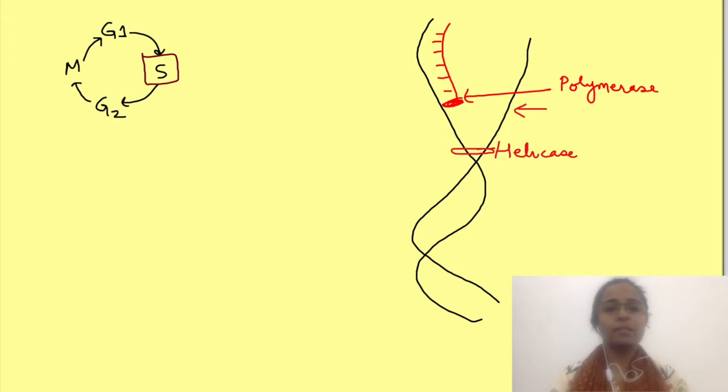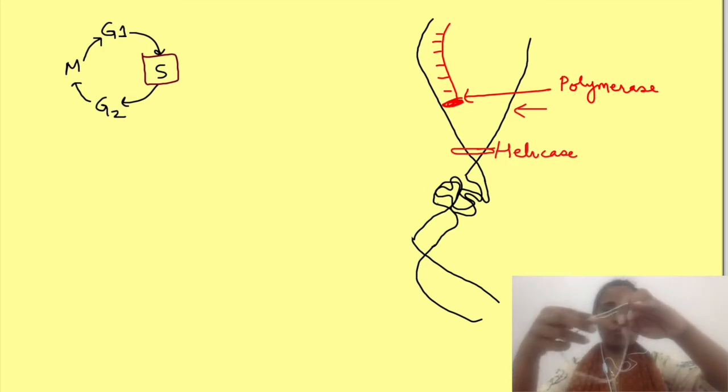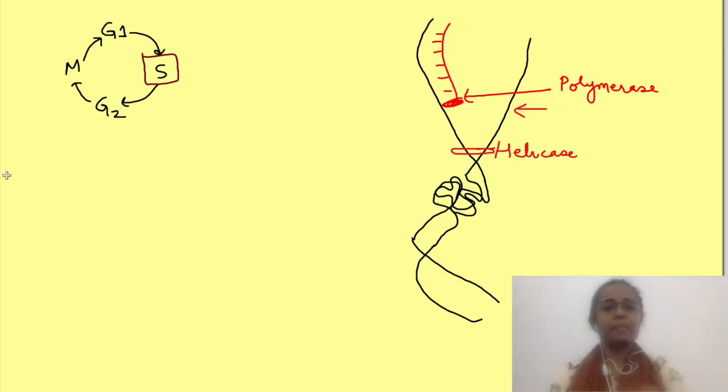Now during this separation of DNA strands, super coils accumulate in the rear end of DNA, something like this. See this is a coil thread and if I open this coil thread from one side, the other side is getting strained and super coils like this are accumulating on the other end. So this will form knots. Similar thing happens in DNA.